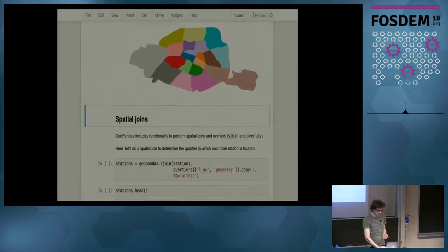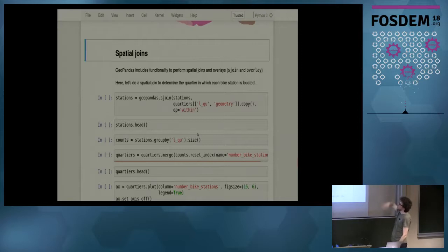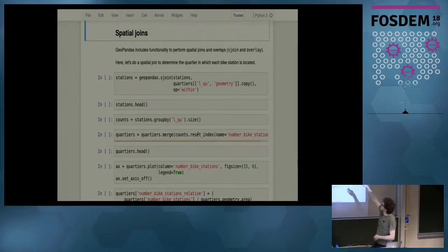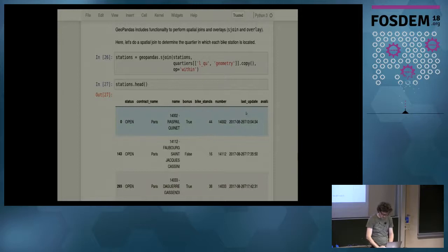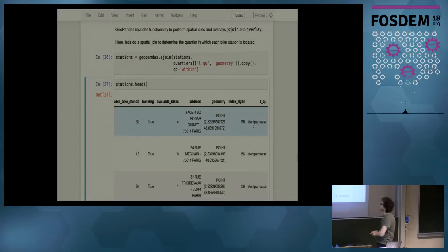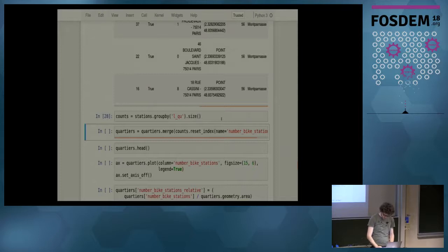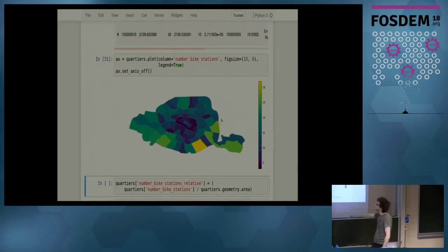GeoPandas also has the ability to do more advanced operations like spatial joins and overlays. Here's an example of a join where I want to join, for each station, the district it lies in. After the join a new column is added to my stations table with the district name. Then I can group by that district name and count the number of stations in each district, and plot that result.